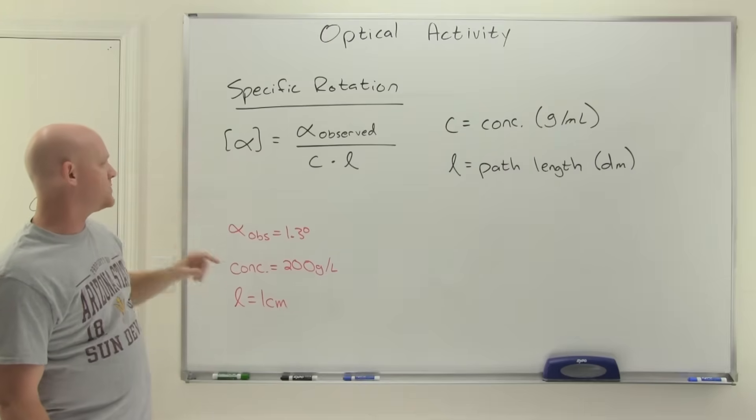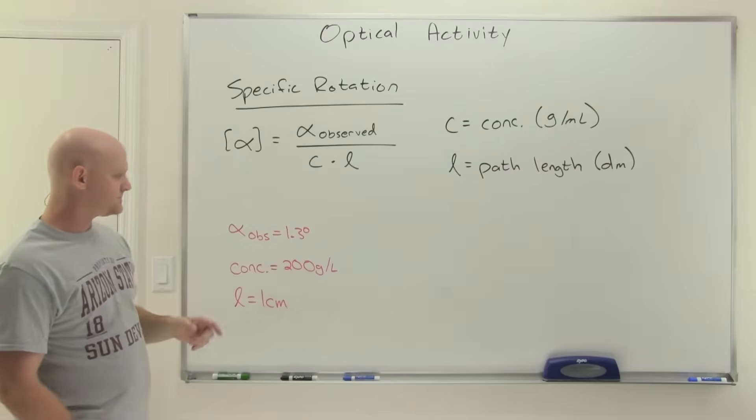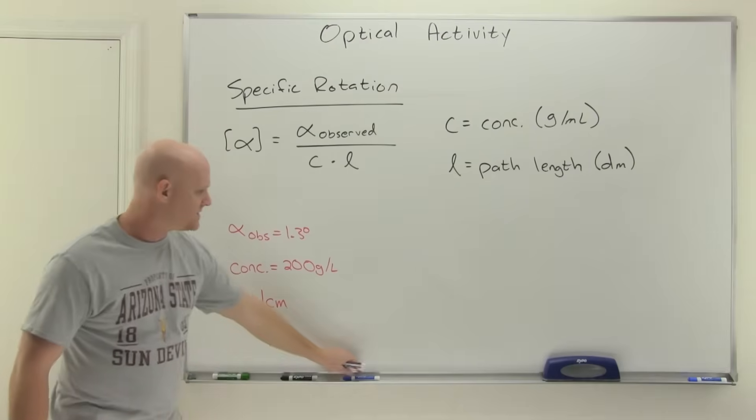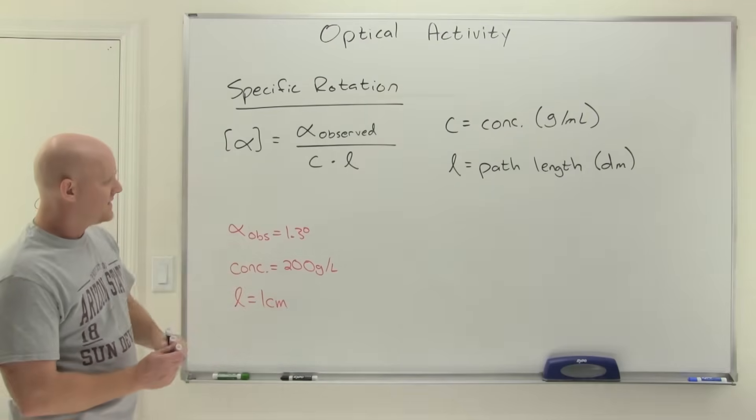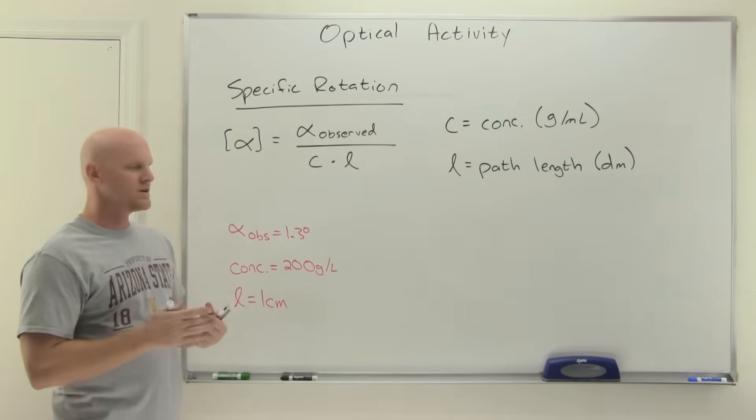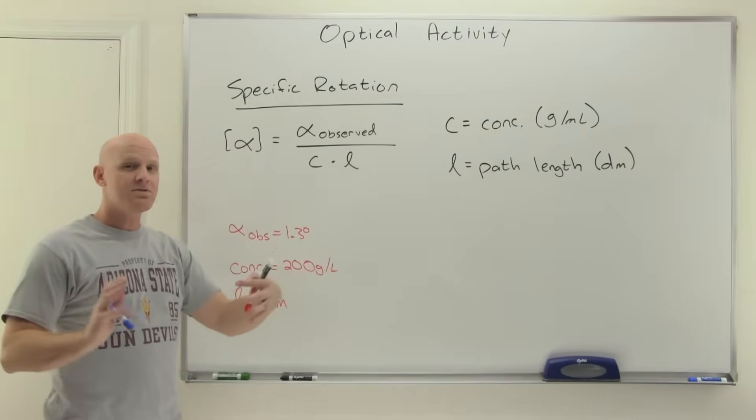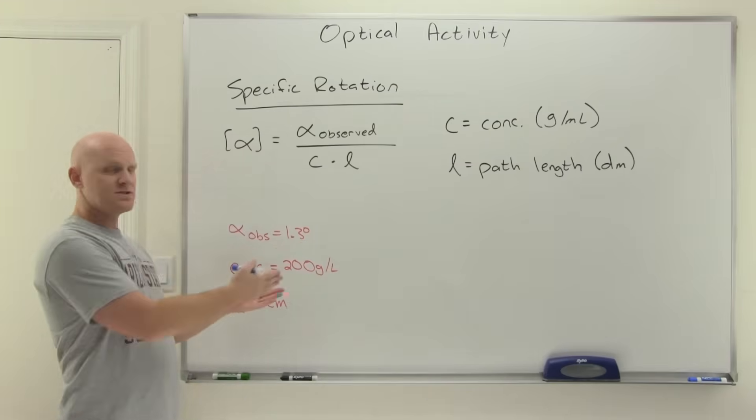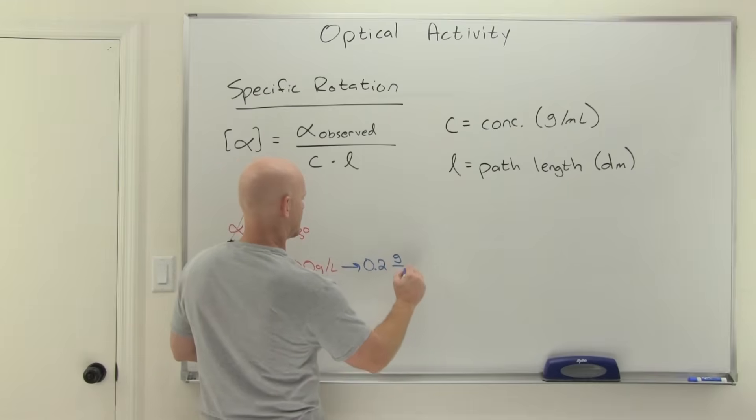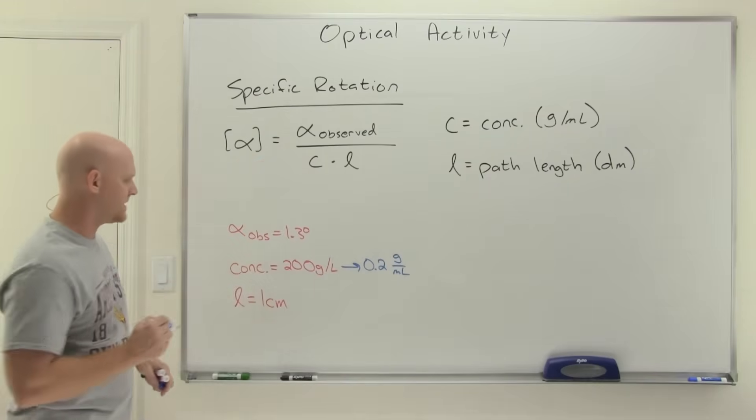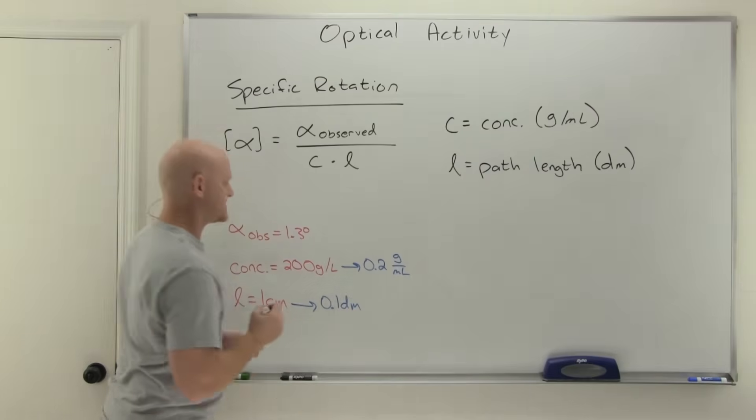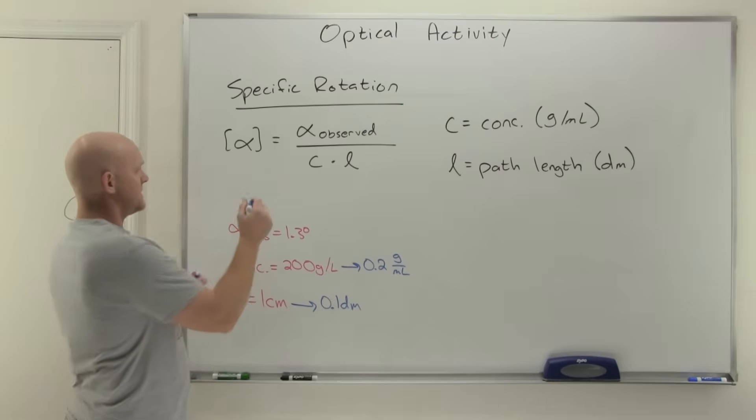And so oftentimes this is one of the few places you're going to get a calculation here. And so we're going to do one ourselves. And if you don't understand how these are defined and what units they are, you might not know how to plug them into a formula like this. And so in this case, we want to calculate the specific rotation when the observed rotation is 1.3 degrees. And notice that's positive 1.3 degrees, which means to the right. So concentration is 200 grams per liter and the path length is one centimeter. And one thing you should realize that neither one of these units is correct. So 200 grams per liter. Well, if there's 200 grams in a whole liter, then how much is in a little milliliter? Well, a milliliter is only one one thousandth of a liter.